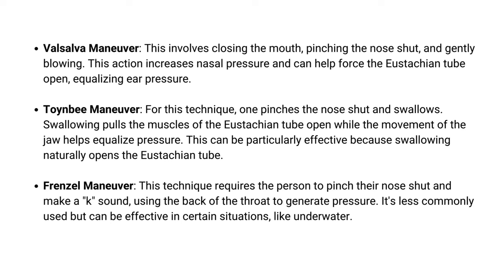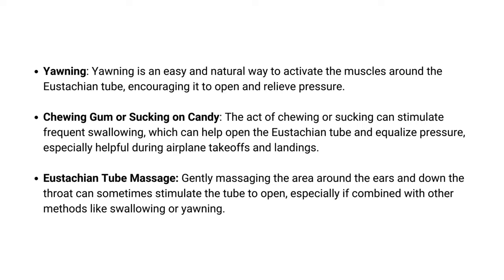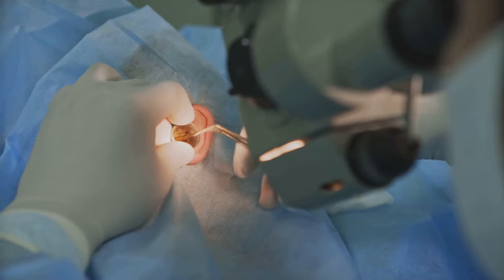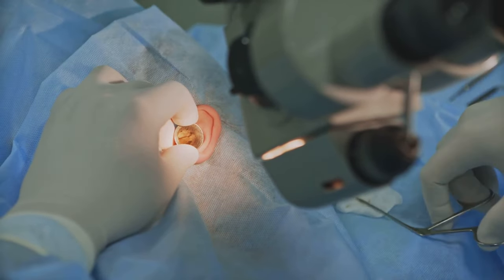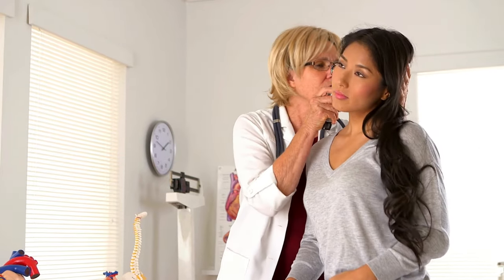Encouraging children to perform auto-inflation exercises — which involve blowing with the nose and mouth closed to open the eustachian tube and promote fluid drainage — can be effective in some cases. In cases where fluid persists for more than three months, or if significant hearing loss or speech development issues are present, the ENT doctor may recommend performing a tympanostomy. During this procedure, a small incision is made in the eardrum to drain any fluid and relieve pressure. A tiny tube, often referred to as an ear tube or tympanostomy tube, is then inserted to ventilate the middle ear and prevent further fluid accumulation. This tube typically remains in place for several months and usually falls out on its own as the eardrum heals. Tympanostomy can significantly improve hearing, reduce the frequency of ear infections, and alleviate symptoms like discomfort and balance problems.